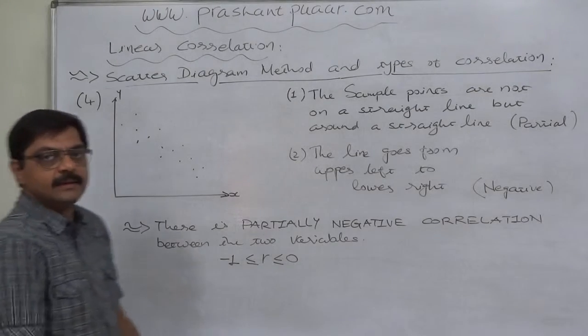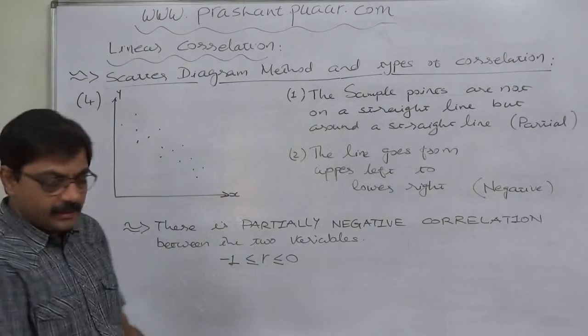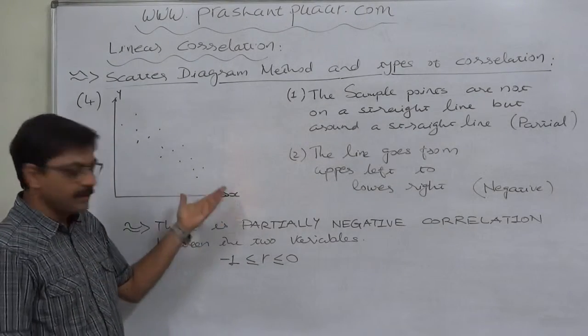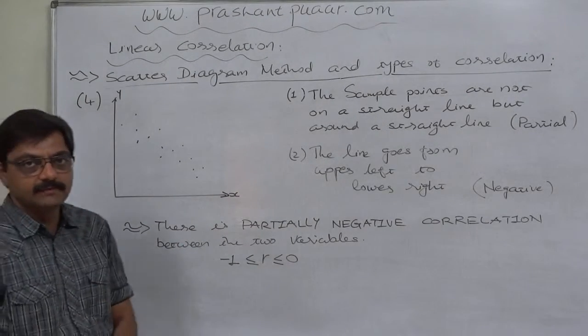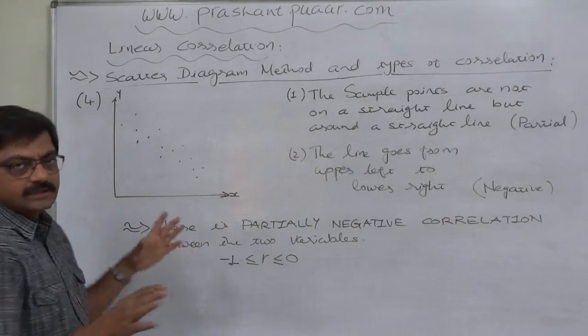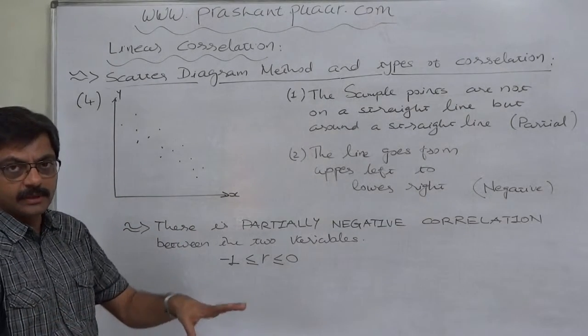Again, take the data, take graph paper, draw an independent variable as the horizontal axis and dependent variable as the vertical axis, and plot all the sample points on the graph paper.